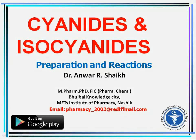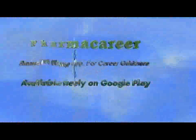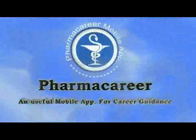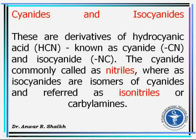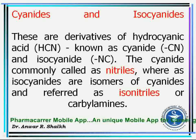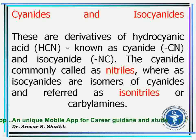Cyanides and isocyanides: methods of preparations and reactions. Cyanides and isocyanides are the derivatives of Hydrocyanic Acid HCN. Cyanides have the functional group CN whereas isocyanides have the functional group NC. Cyanides are commonly known as nitriles, whereas isocyanides are the isomers of cyanides and referred to as isonitriles or carbylaminines.